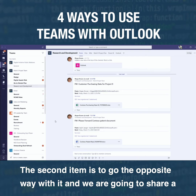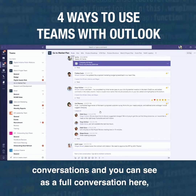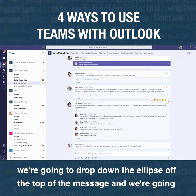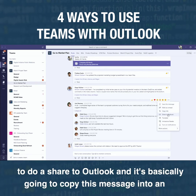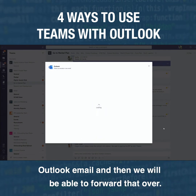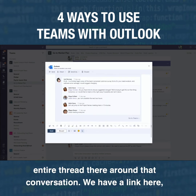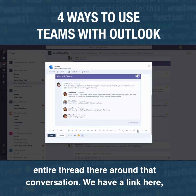The second item is to go the opposite way — sharing a message from Teams over to Outlook. We jump onto one of our conversations, which has a full conversation thread. We drop down the ellipse off the top of the message and do Share to Outlook. It basically copies this message into an Outlook email, and you can see the entire thread around that conversation.